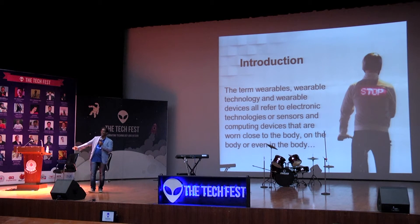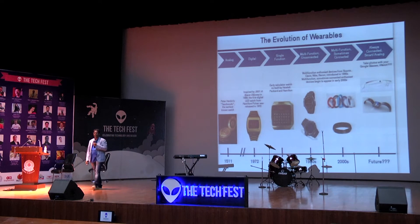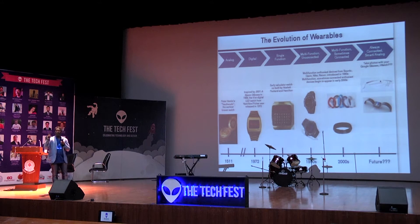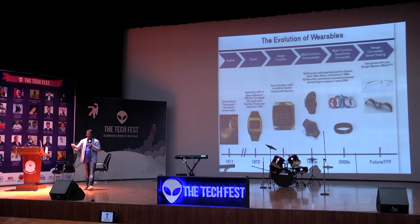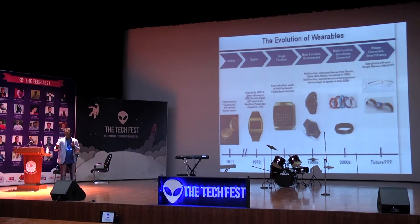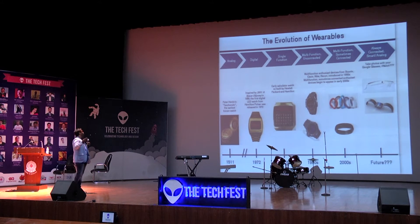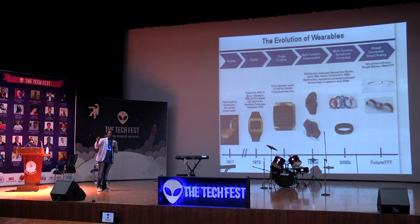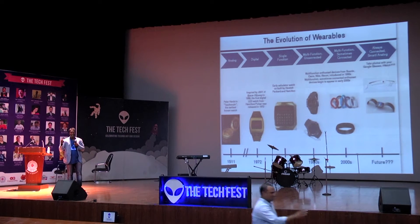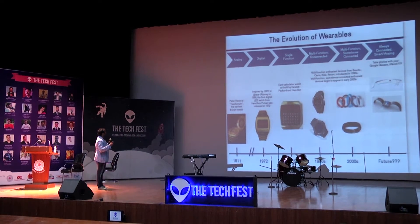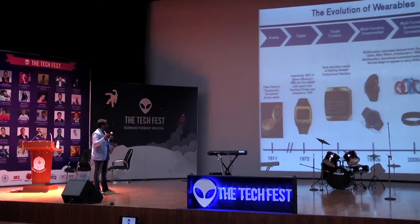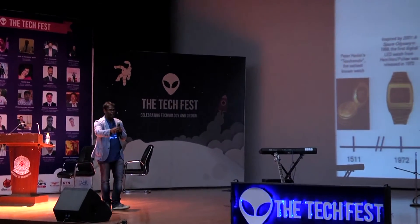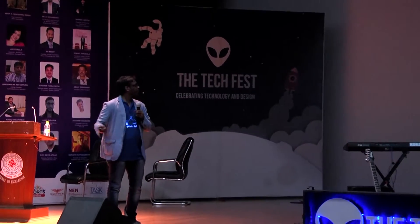Would you believe the first wearable was created in 1511? There was an inventor called Peter Henley, considered to be the father of the watch. He created a watch about three inches in size — that's technically the first wearable. A couple of years later, the first LED watch was created in 1972, inspired by the novel 2001: A Space Odyssey, by a company called Pulsar — seen in many James Bond movies. Then the early calculator watch in 1975, Casio watches in the 90s, and then Fitbits and Google Glass.